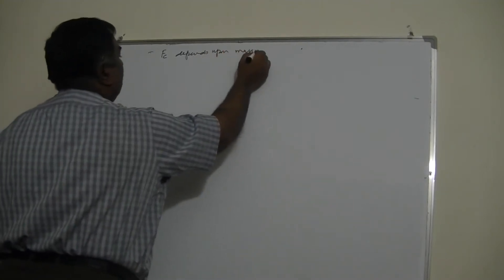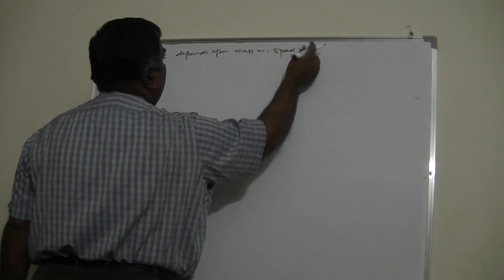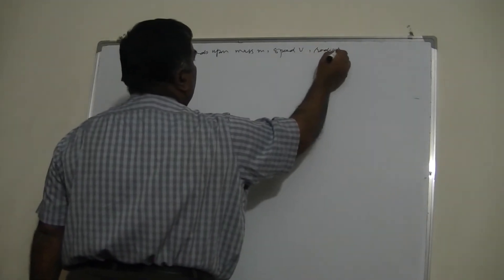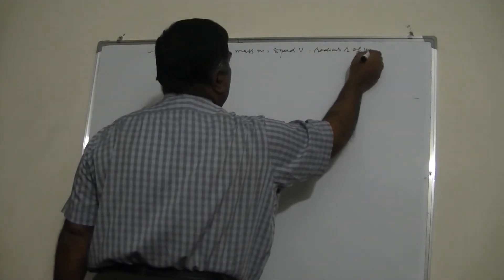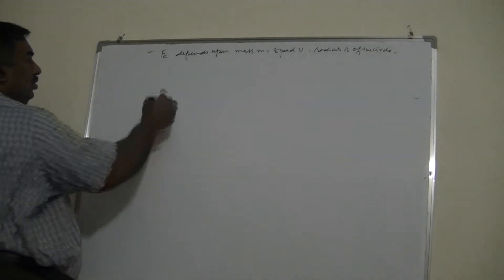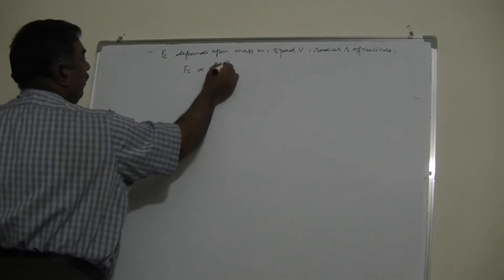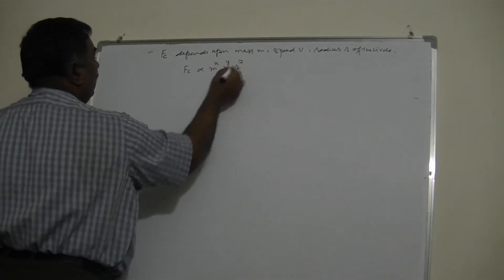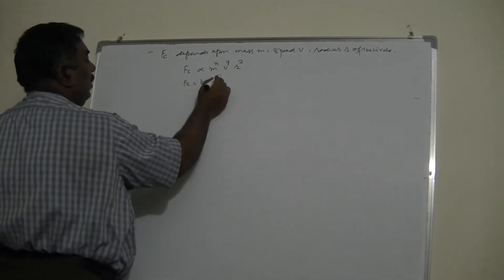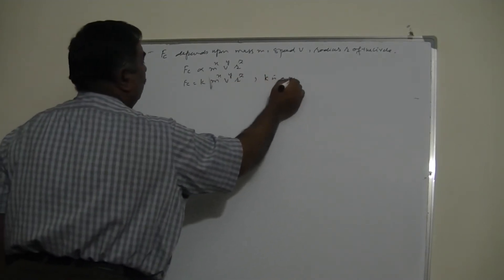Similarly, there is another equation. Suppose the examiner says the centripetal force Fc depends upon mass m, speed v, and radius r. I write: Fc varies as m^x · v^y · r^z, so Fc = k · m^x · v^y · r^z, where k is a unitless constant.